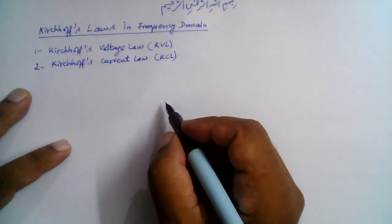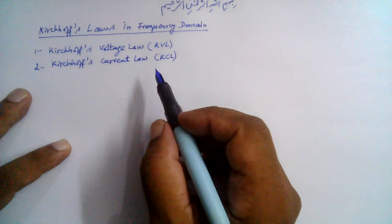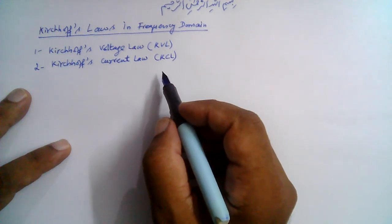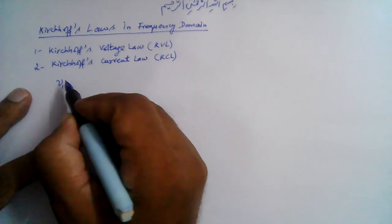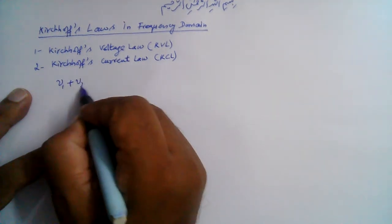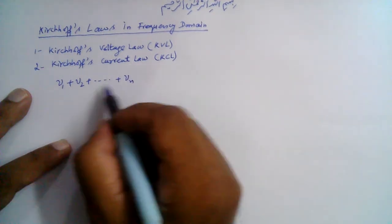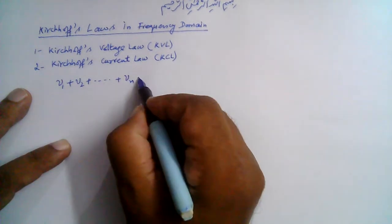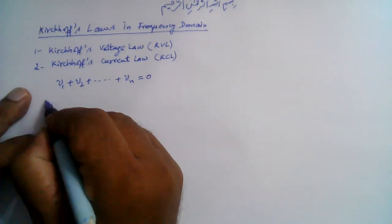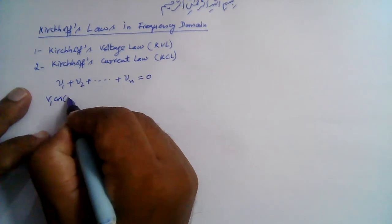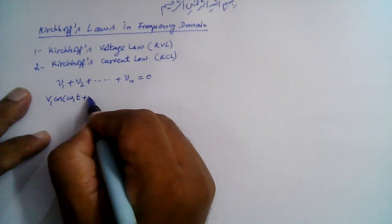In the time domain, according to Kirchhoff's Voltage Law or KVL, the sum of voltages around the loop is zero. That is, if we have voltages V1 plus V2 and so on till VN in a loop, their sum is zero. Suppose V1 is V1 cos(ω₁t + θ₁).